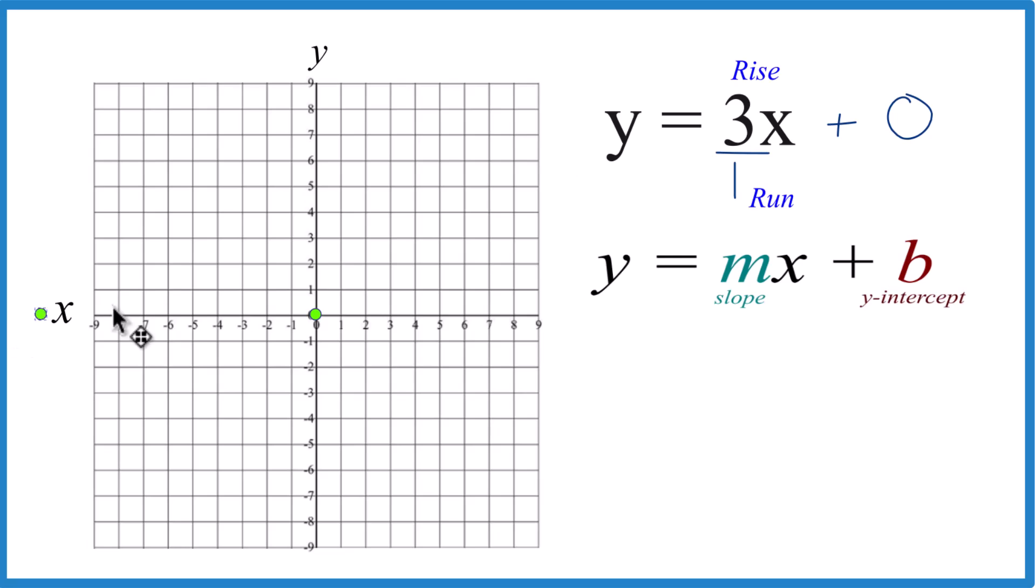So we go to our y-intercept right here. We're going to rise 1, 2, 3, and run 1. Go from this point, 1, 2, 3, and run 1, and you can see the line.